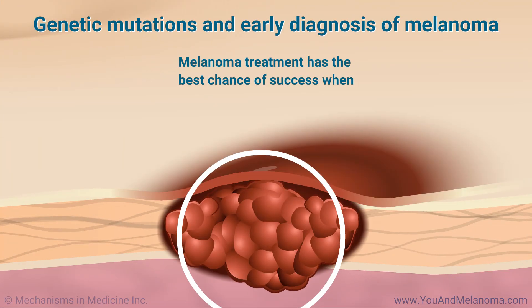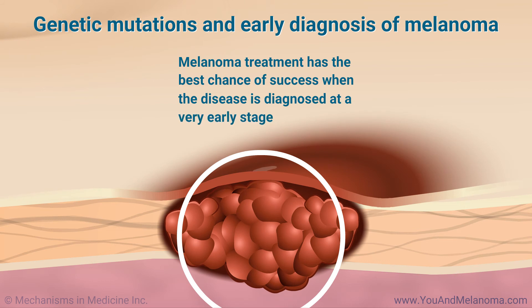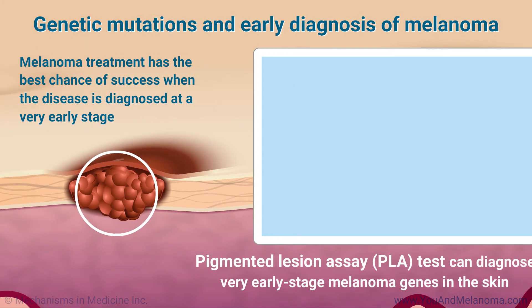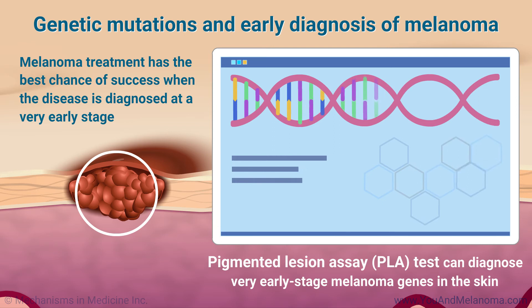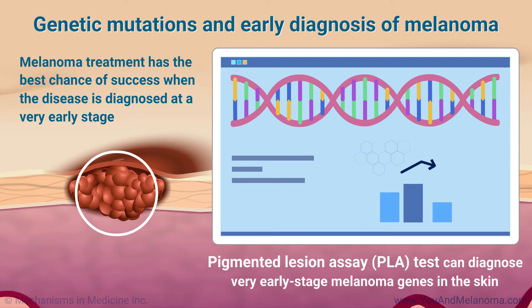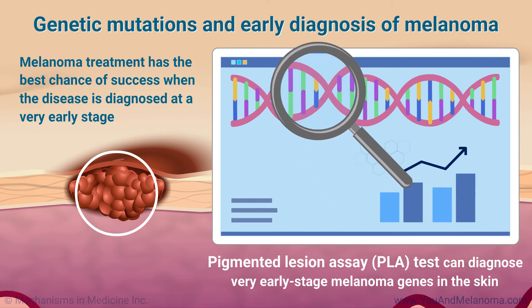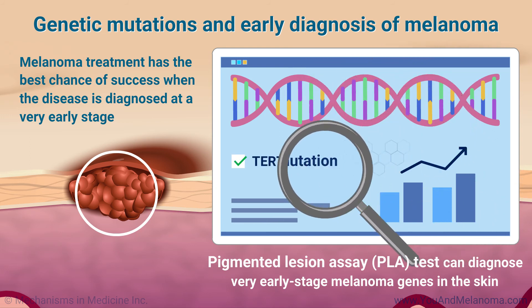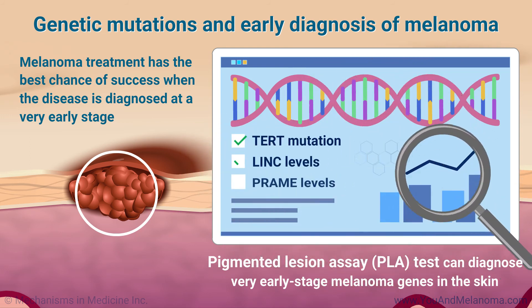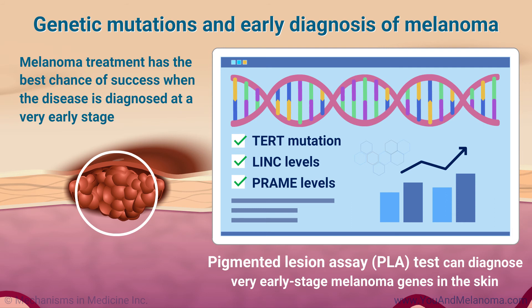Melanoma treatment has the best chance of success when the disease is diagnosed at a very early stage. A pigmented lesion assay, or PLA adhesion patch test, is now available that can diagnose very early stage melanoma genes in the skin. It does this in two ways: it looks for mutations in a gene called TERT, and it measures the levels of two genes called LINC and PRAME that are found in melanoma but not in normal skin.